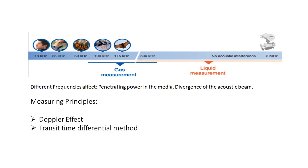Up to 20 kilohertz is known as the audio frequency range. Above 20 kilohertz is the ultrasound frequency range. Up to 500 kilohertz is generally used for gas measurement, and from 500 kilohertz to 2 megahertz it is used for liquid measurement. The different frequencies will affect the penetrating power in the medium and also the divergence of the acoustic beam.